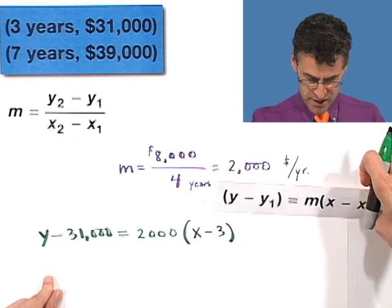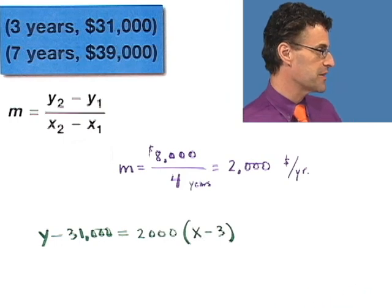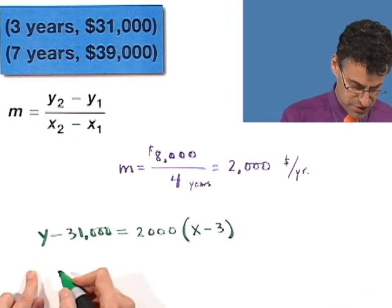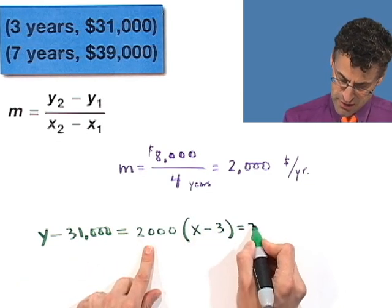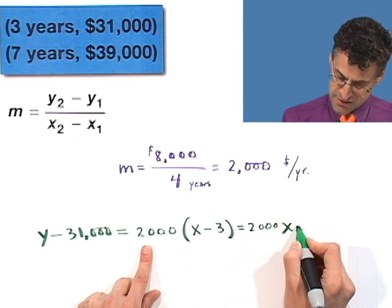Okay, so there's the graph of that. And now it really did ask for us to write this thing in slope-intercept form, so we have to now solve this for y. So no problem. I think I'll just distribute this while I'm here. The 2,000 over hits the x, but it also hits the negative 3, so that's going to be minus 6,000. Don't forget to distribute.